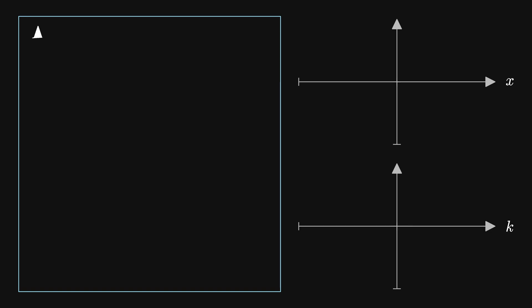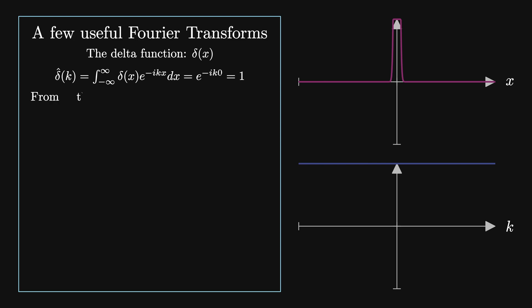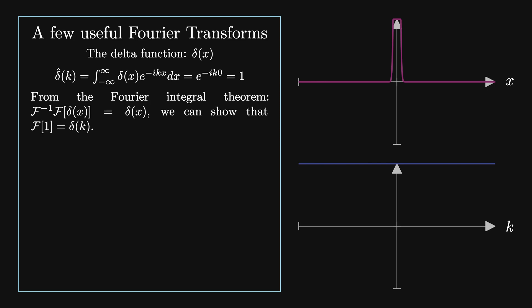Let's look at some properties of the Fourier transform through Fourier transforms of some common functions. We'll start with the delta function. The Fourier transform of the delta function is the integral from minus infinity to infinity of delta of x times e to the minus i k x dx, which equals e to the minus i k times 0, which equals 1. So the Fourier transform of the delta function is a constant function. From the Fourier integral theorem, we can show that the Fourier transform of a constant function is then a delta function.